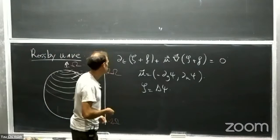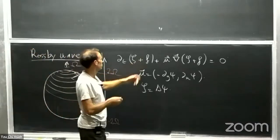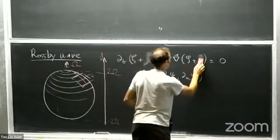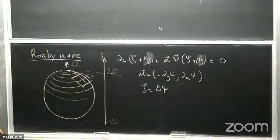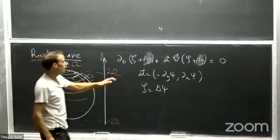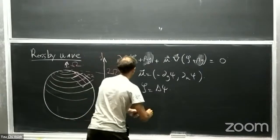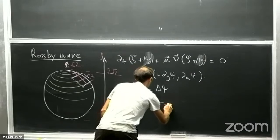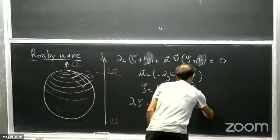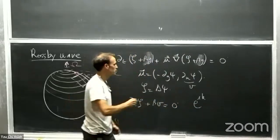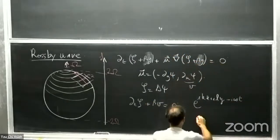You can go to the next order and make the beta-plane approximation. Wherever you are on the sphere, you will end up with an equation where beta is the gradient of the Coriolis parameter. Looking at the linearized equation around a state of rest, the dynamics becomes ∂ₜζ + βv = 0. You have an equation with homogeneous coefficients, and looking at plane wave solutions, you get the dispersion relation for Rossby waves.